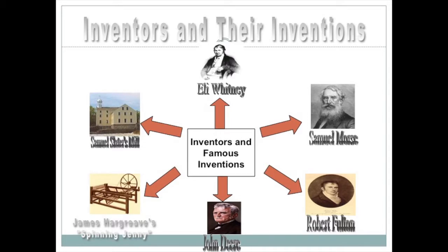Industry is often spurred on by innovation, and innovation is spurred on by individuals and what they invent. Key inventors include Samuel Slater's mill, the spinning jenny which spun raw materials into thread, John Deere and his plows, Robert Fulton and his steamboat, Eli Whitney and the cotton gin and interchangeable parts for guns, and Samuel Morse with arguably the most important invention — the telegraph. These inventions would spur on the Industrial Revolution and the factory system.